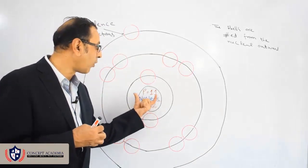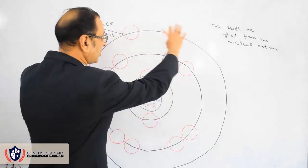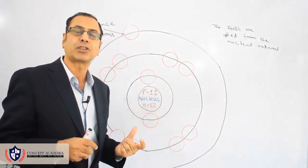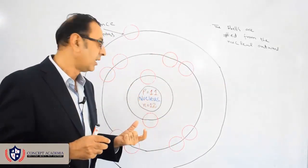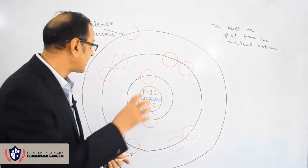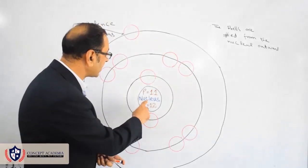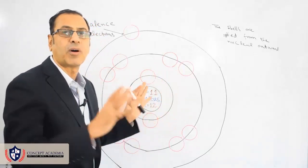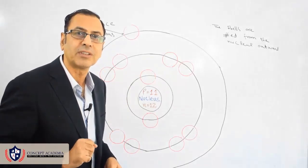The nucleus is a very small portion of the atom compared to the total size of the atom. The nucleus is of very small size, and in that very small space, there are protons and neutrons packed together in the center of the atom. This is the atom of sodium, in which there are 11 protons and 12 neutrons packed tightly together.